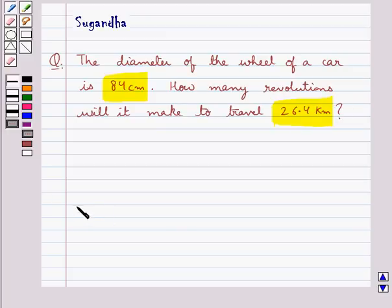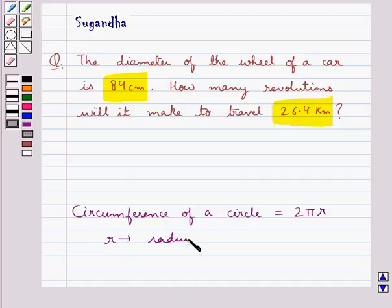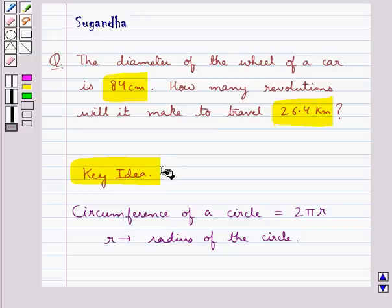First let's recall the formula for the circumference of a circle. This is equal to 2πr where r is the radius of the circle. This is the key idea that we use in this question.